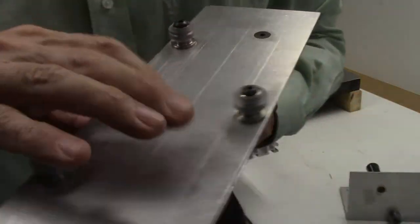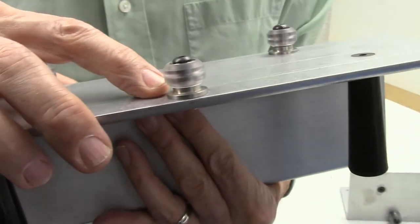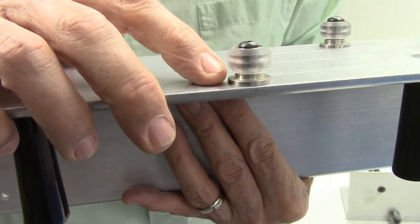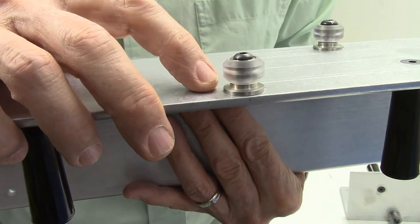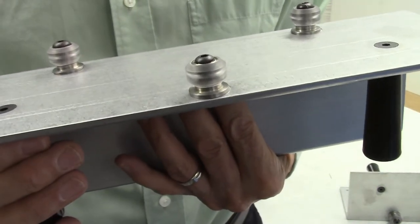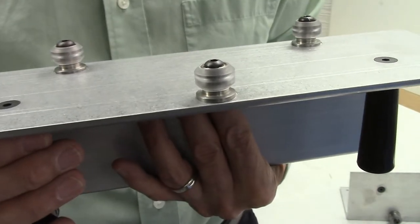Now, in this one, I purposely put this other bearing on upside down, and you can see there is no gap at the bottom of this bearing. If you were to put this on your Accu-Slice system, you'll hear a scraping sound, almost like metal scraping, and you'll notice something's wrong in the orientation of the bearings.